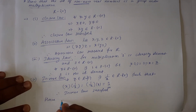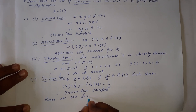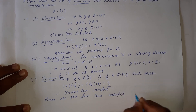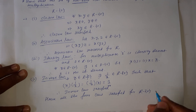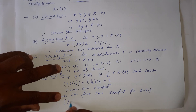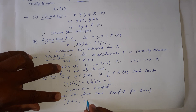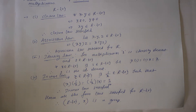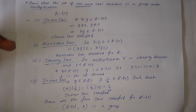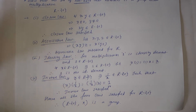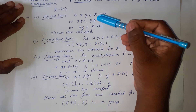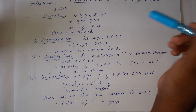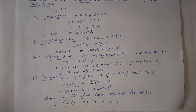Hence all four laws are satisfied for R minus {0}, the set of nonzero real numbers. Therefore, (R minus {0}, ×) is a group. In general, to prove a given set is a group we need to satisfy all four laws using arbitrary elements — you can use A, B, C or X, Y, Z — and then write the conclusion.